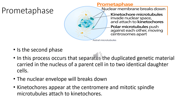Next is the prometaphase, the second phase. In this process the nuclear envelope will break down. The kinetochores appear at the centromere region and mitotic spindle microtubules attach to the kinetochores. In the diagram you can see that the nuclear membrane breaks down and the kinetochore microtubules invade the nuclear space and attach to the kinetochores. Also, the polar microtubules push against each other, moving the centrosomes apart.